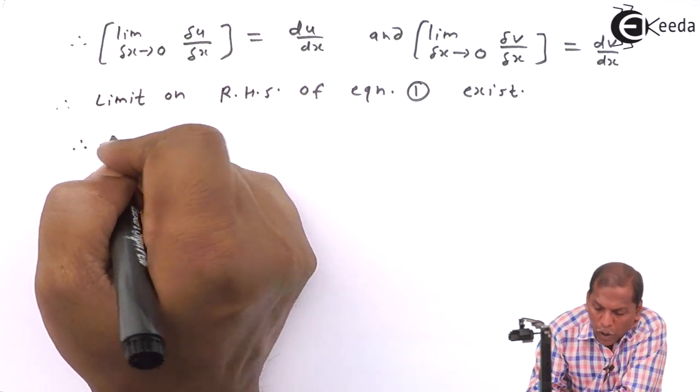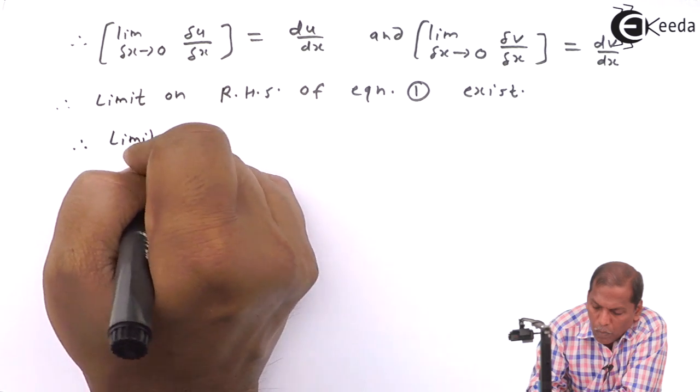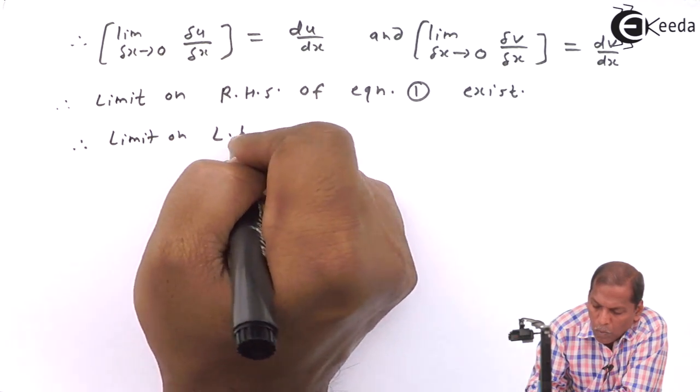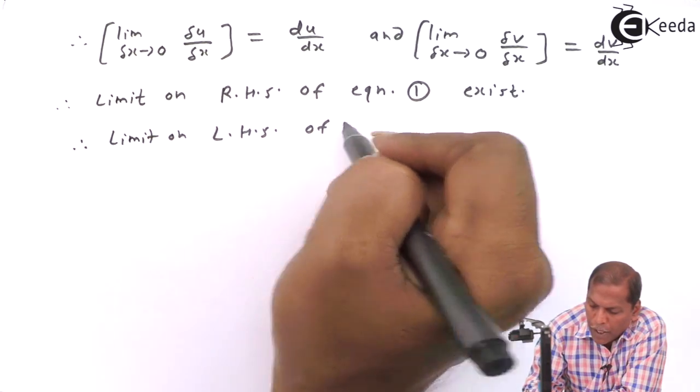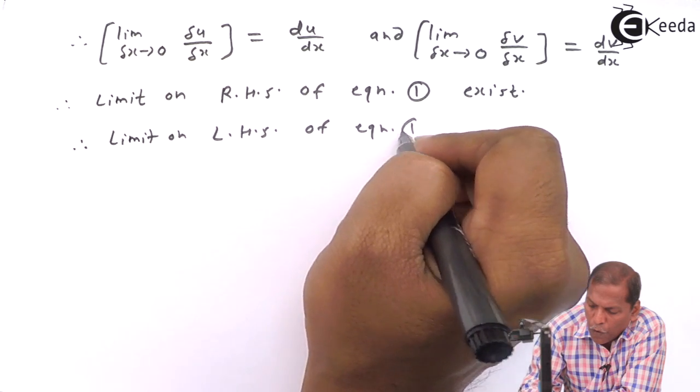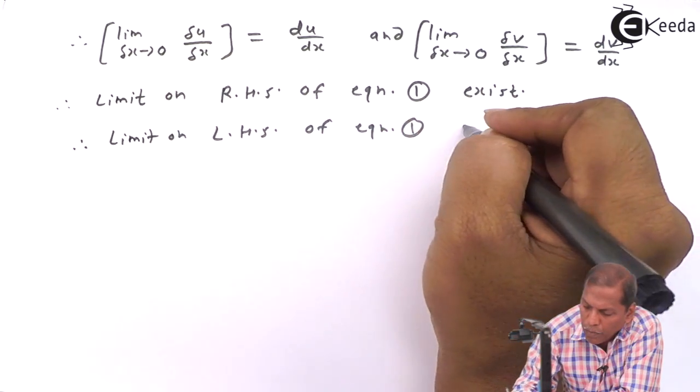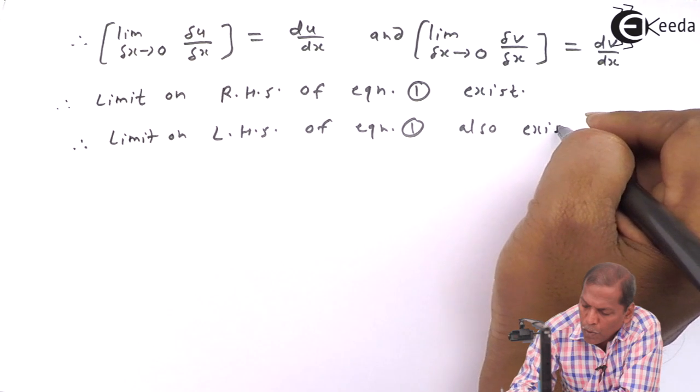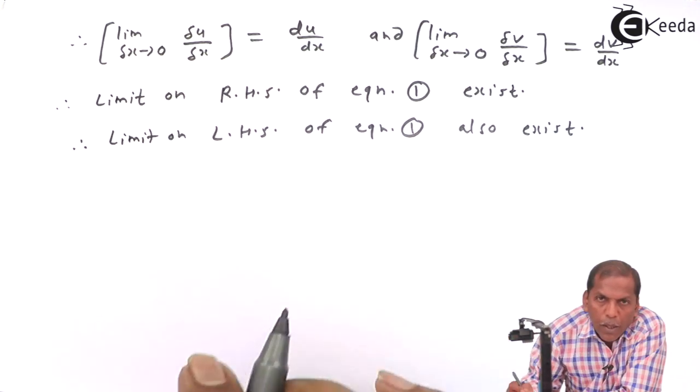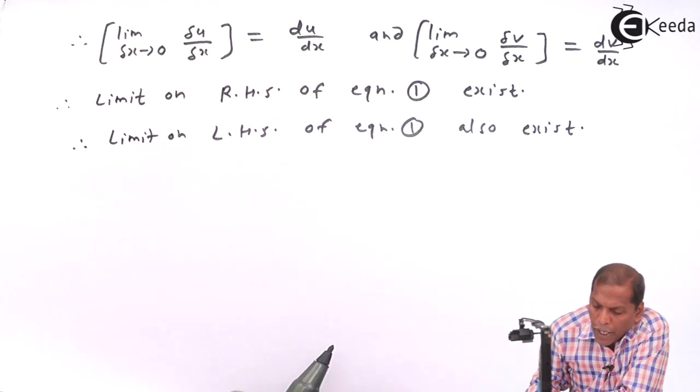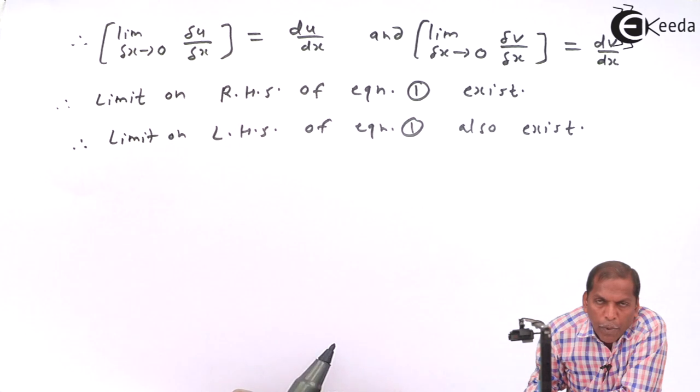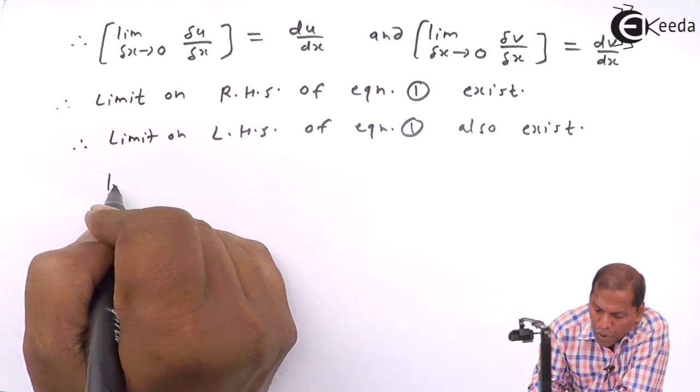The limit on the left-hand side of equation 1 exists. The limit on the right-hand side of equation 1 also exists and is given by